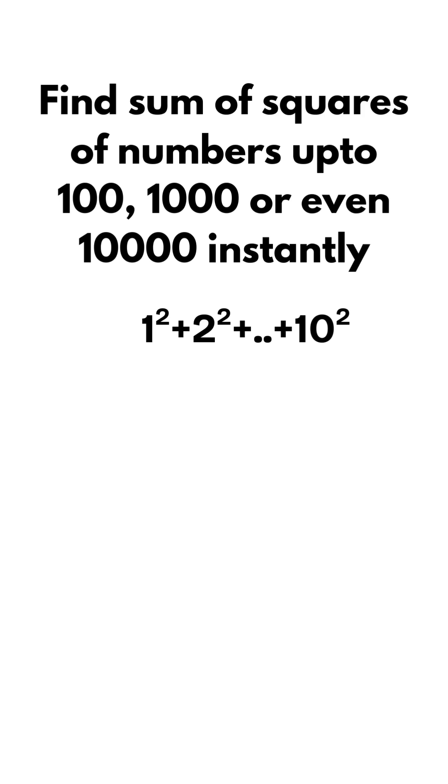Let's calculate sum of squares of numbers up to 10 using the formula n times n plus 1 times 2n plus 1 divided by 6. It comes to 385. Here n is 10. Just remember the number 385.